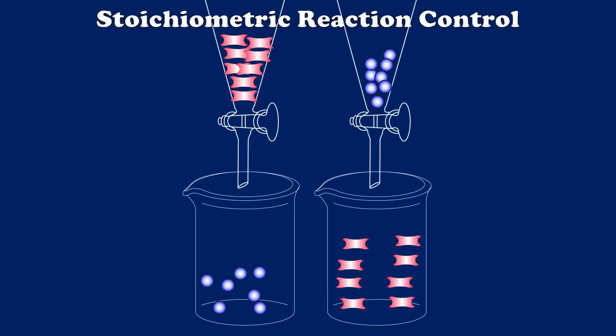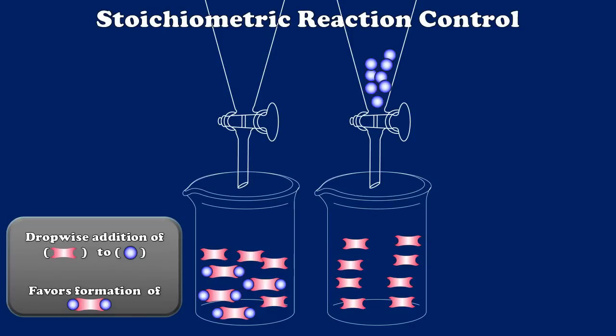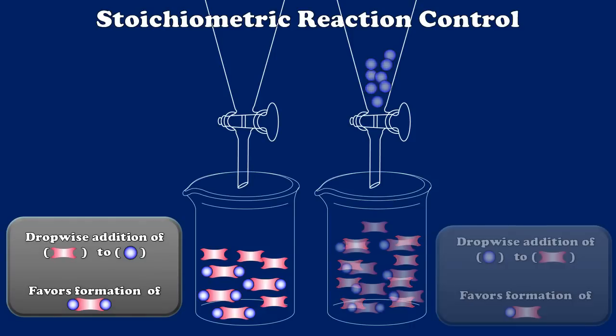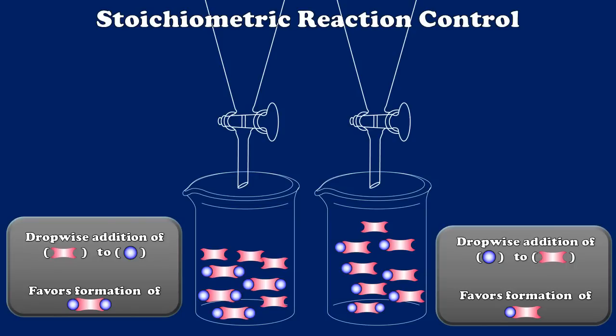Simply by changing the way that we are adding one reagent to another, we can create a situation where we make a different ratio of the same product.